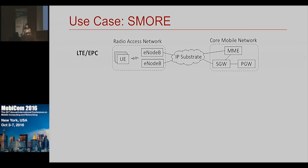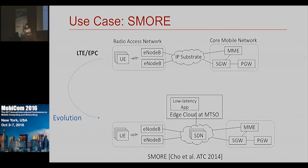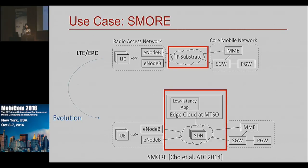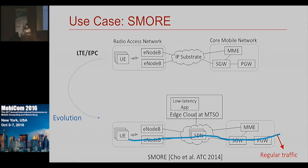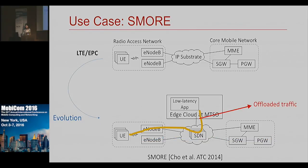Next is the SMORE service — similar to LTEPC, but with the IP substrate substituted with an SDN substrate and an edge cloud. The regular traffic still goes through the core, but selective offloading can also happen to the edge cloud.